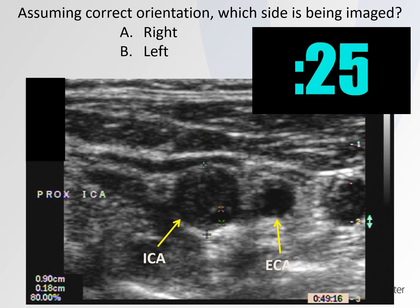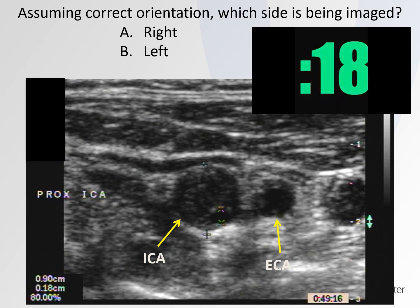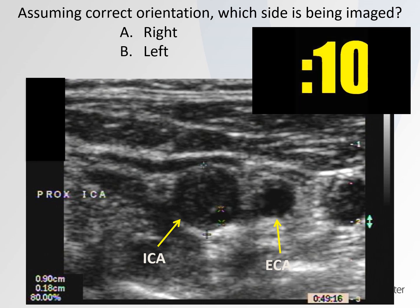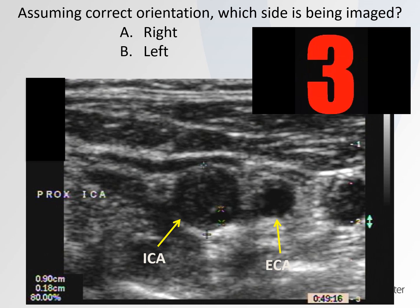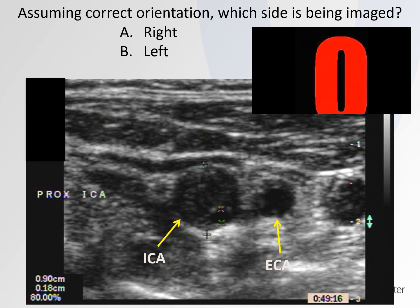You got all that? If that's the case, assuming correct orientation, which side is being imaged — is this the right side or the left side? So, did you get it right? Remember, in a transverse view you're looking from the feet to the head, so the patient's right is to the left of the screen. That means the patient's medial side is to the right of the screen — and therefore the external is medial. This is the right internal and external carotid artery.